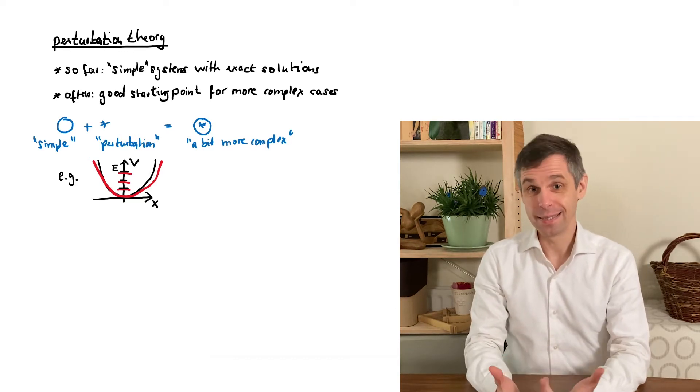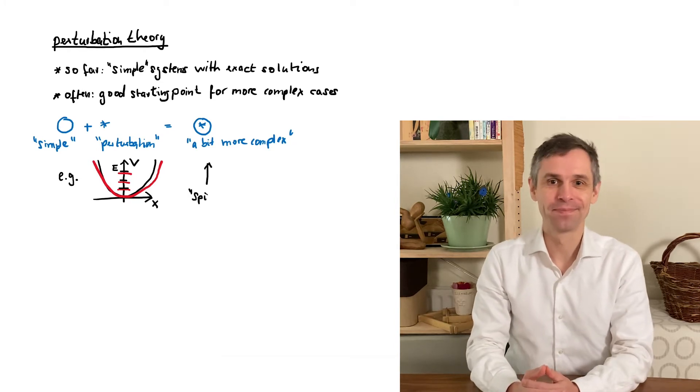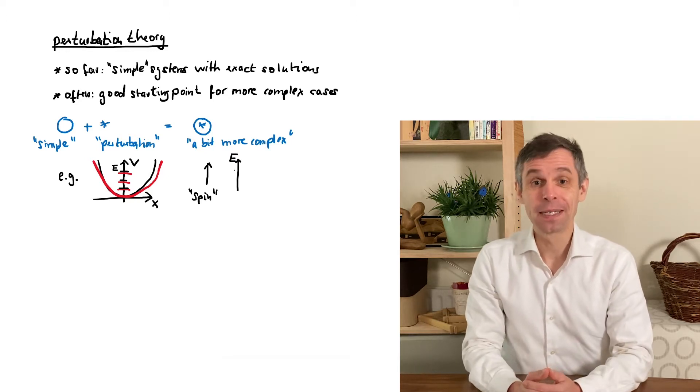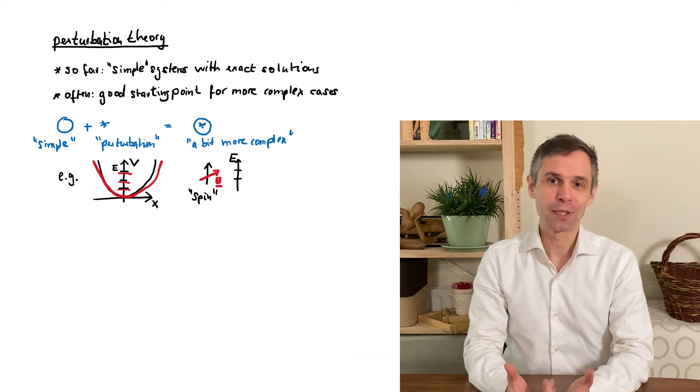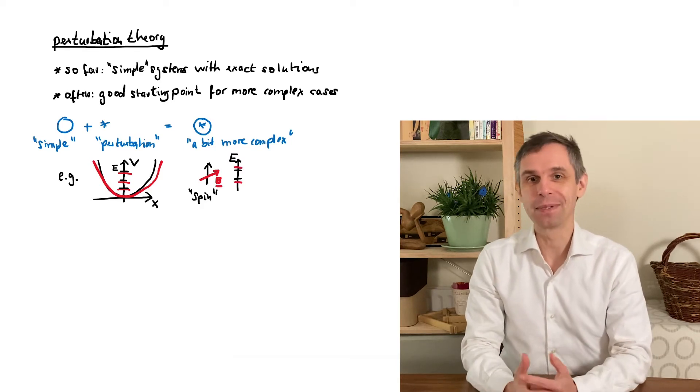A little bit later in this course we will study a very simple marvelous quantum system known as a spin. This fundamental system has only two energy levels which can be conveniently probed by a magnetic field. So now we can ask what happens to the spin when we expose it to a very weak magnetic field.